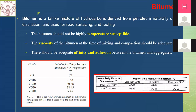Bitumen is a tar-like mixture containing hydrocarbons, derived from petroleum — either naturally or through distillation — and is majorly used for road surfacing and roofing. A key desired property is that bitumen should not be highly temperature susceptible. Temperature susceptibility refers to the change in material behavior with change in temperature. Bitumen is fluid at high temperature and solid at low temperature, but we want this change to be gradual.